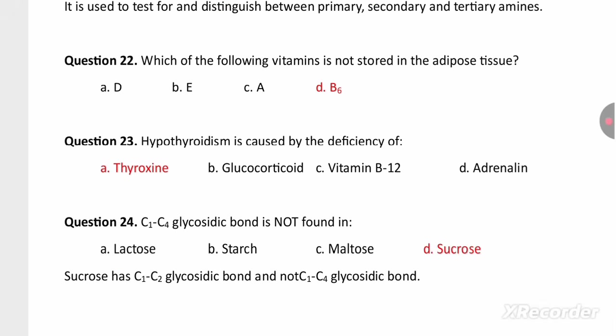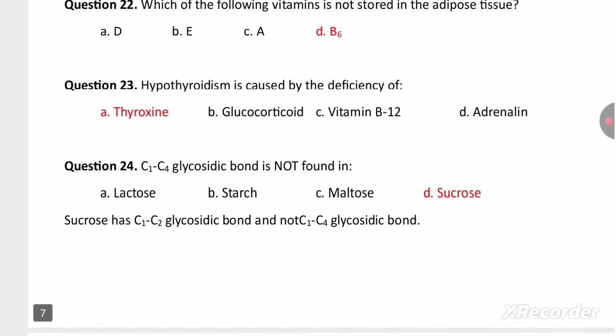The vitamin not stored in adipose tissue is B6, because vitamin B6 is water-soluble. Vitamins D, E, and A are fat-soluble and can be stored, but B6 cannot be stored in adipose tissue.